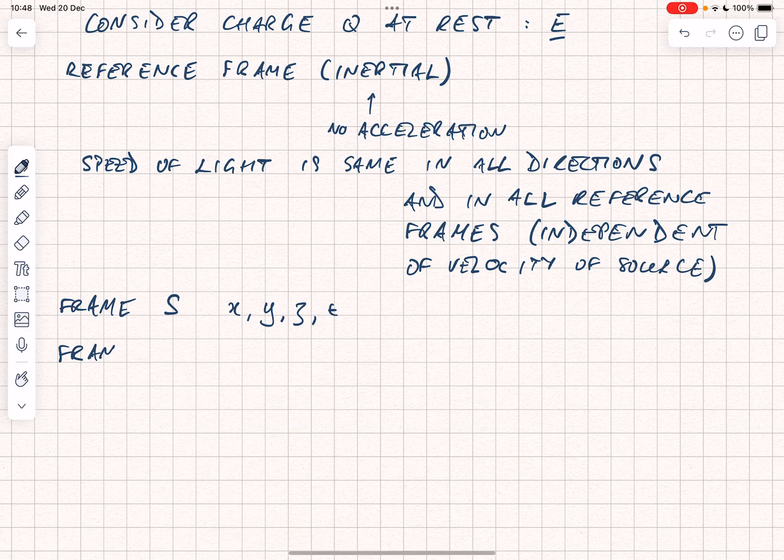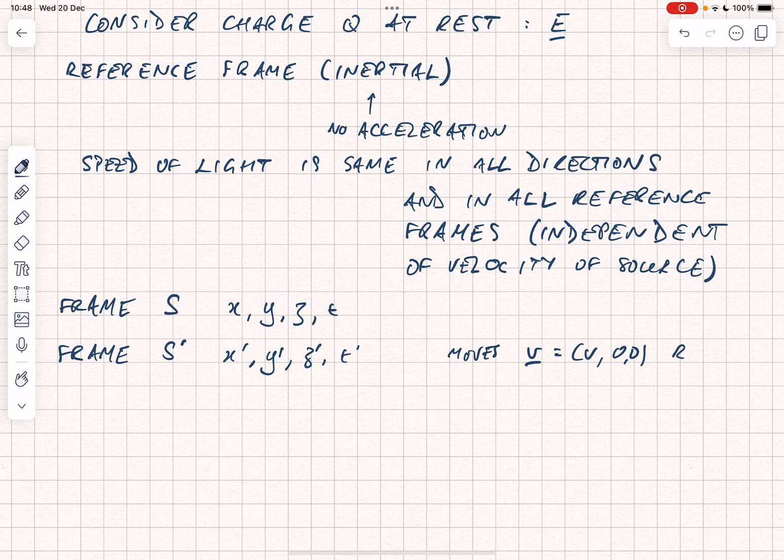We'll have a second frame, S' with coordinates X', Y', Z', and T'. And S' moves at velocity v is equal to v, zero, zero. In other words, along the X-axis relative to S.